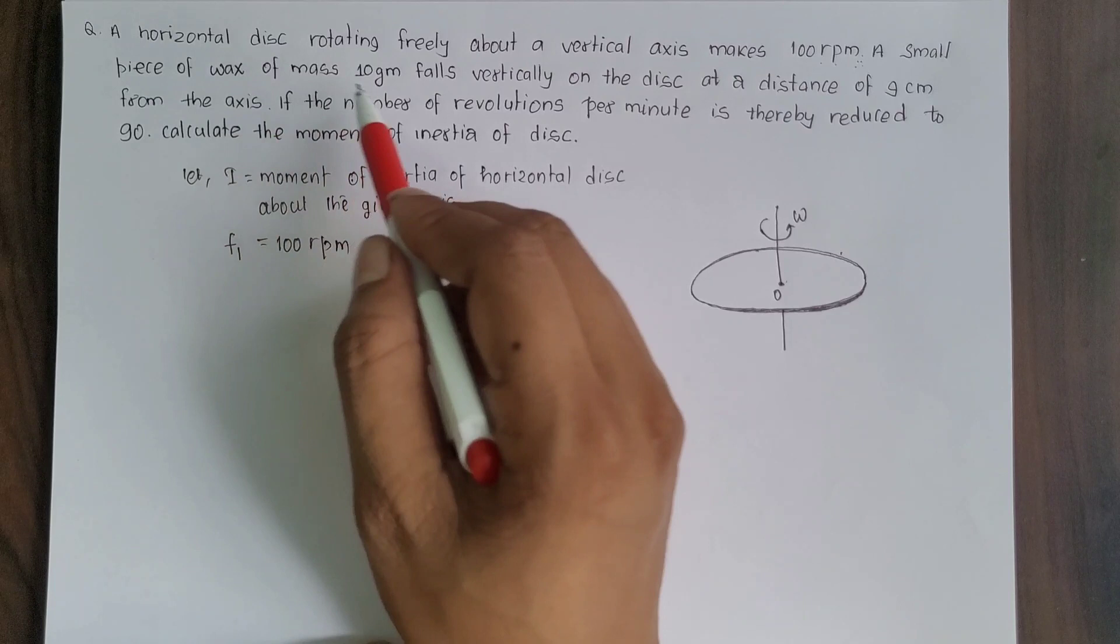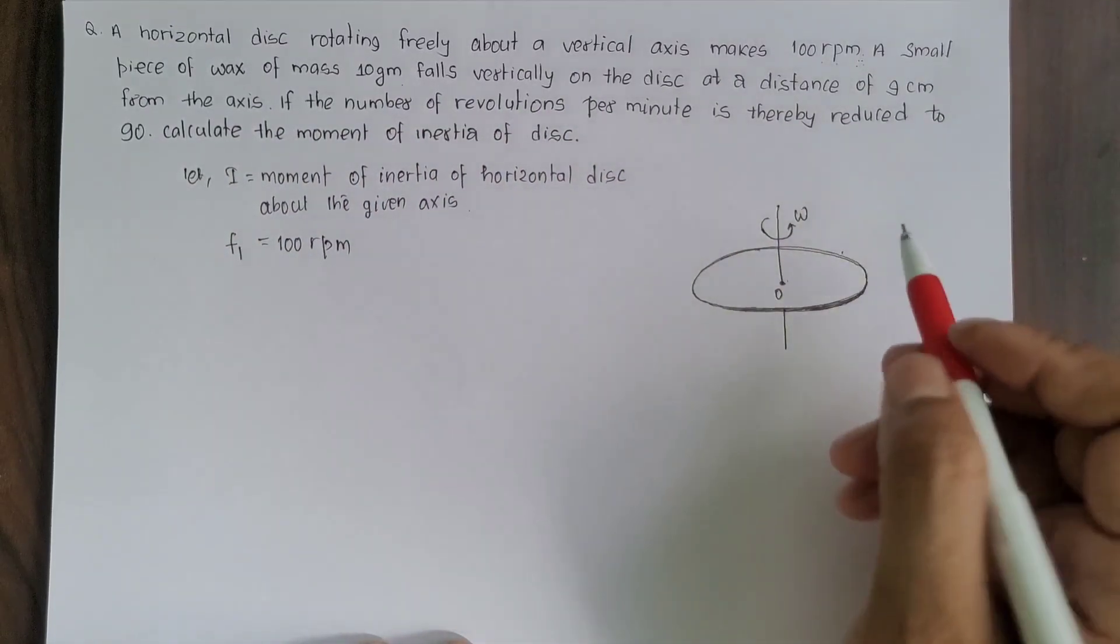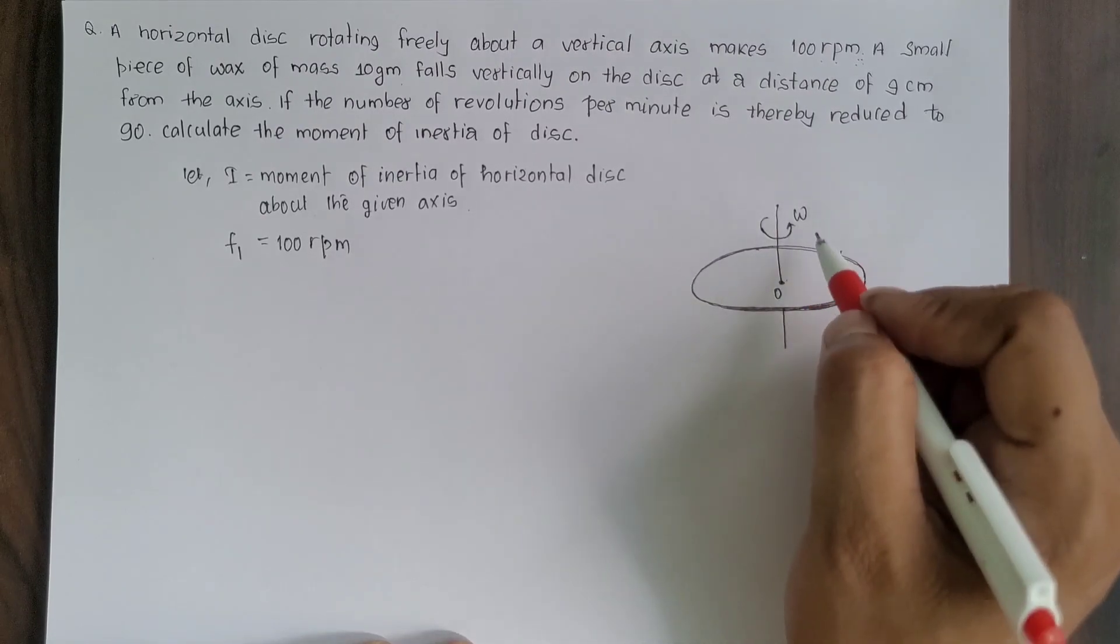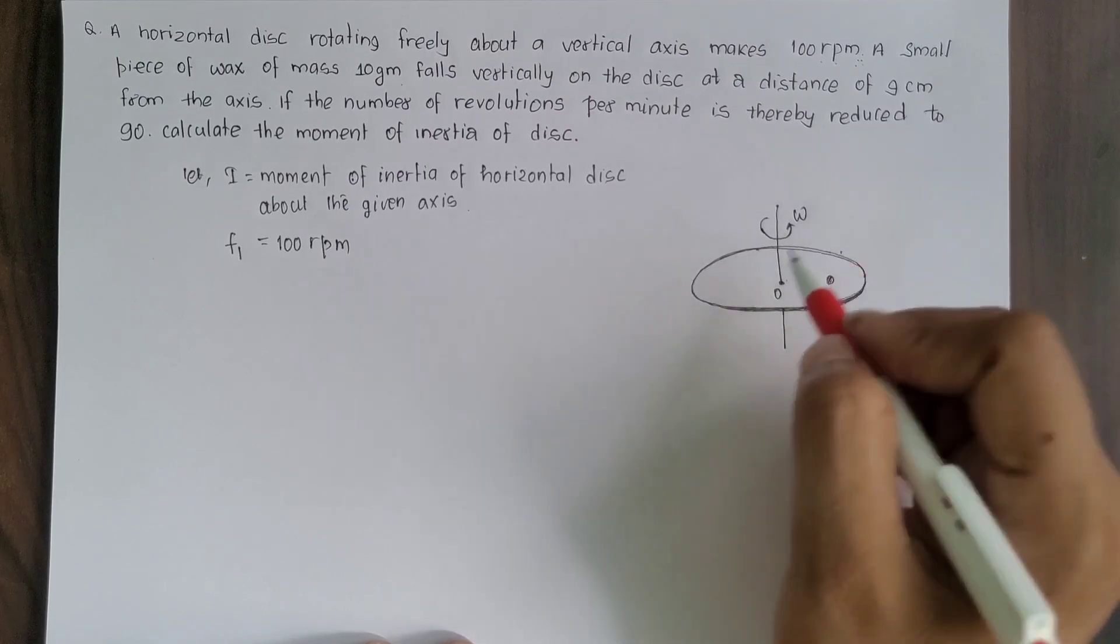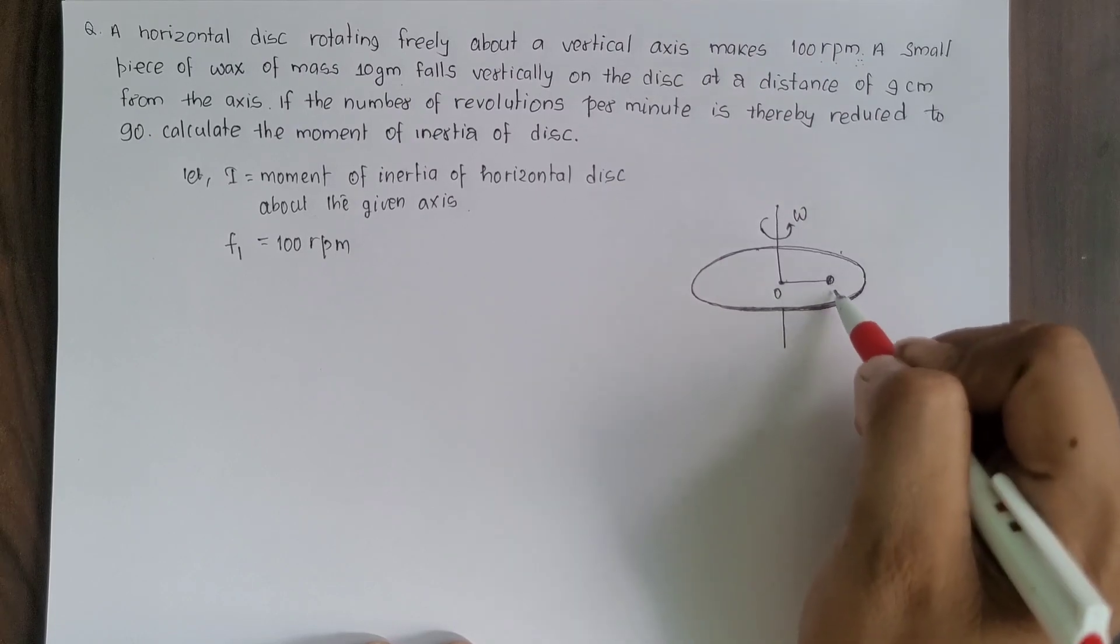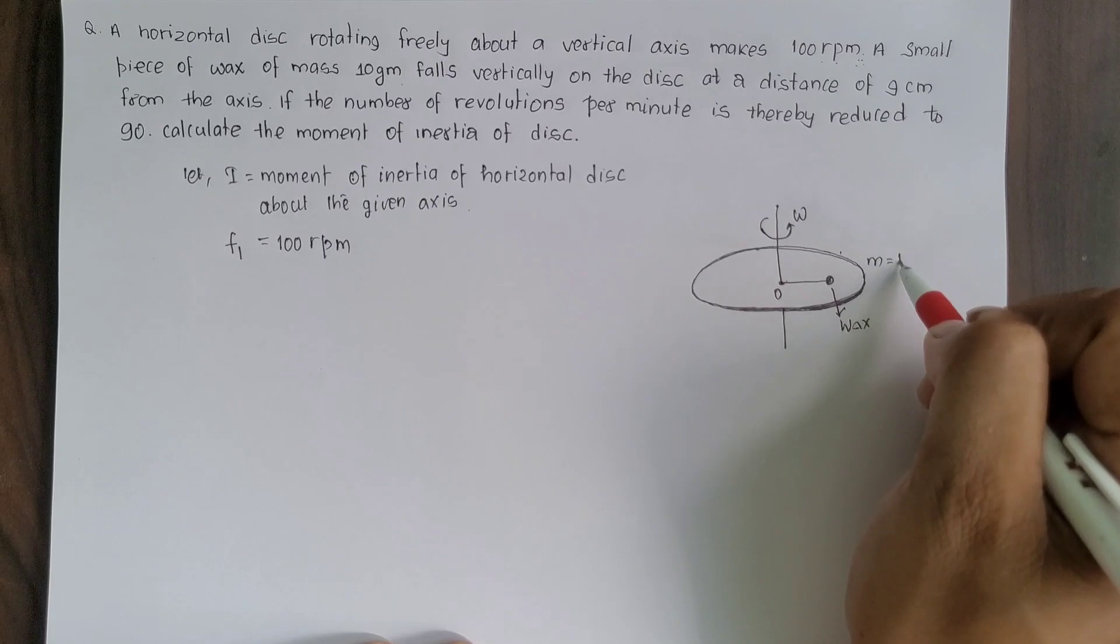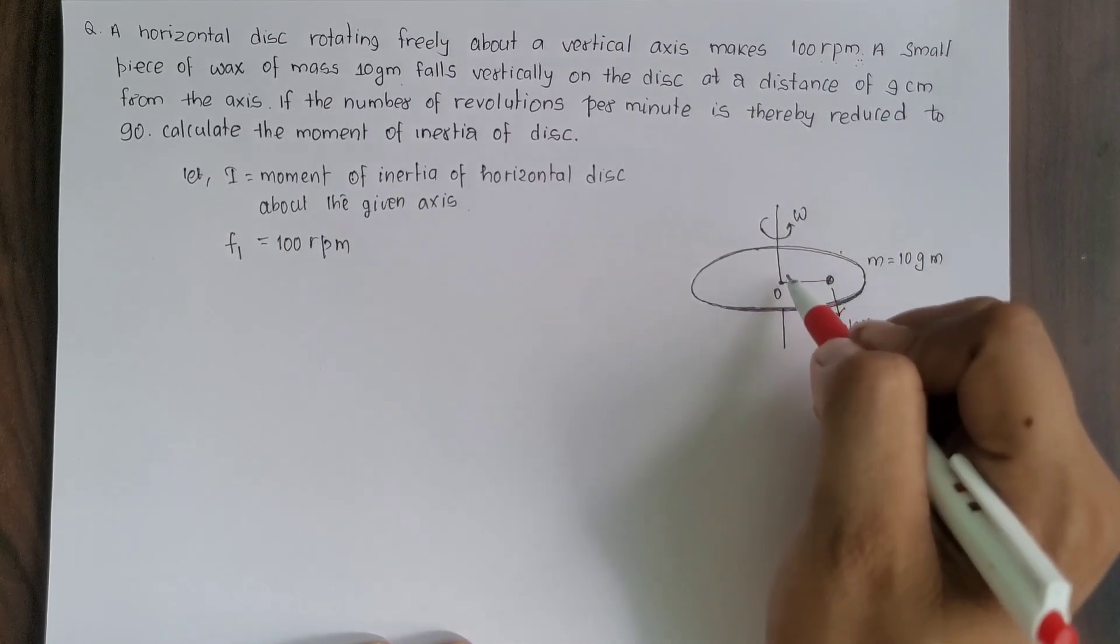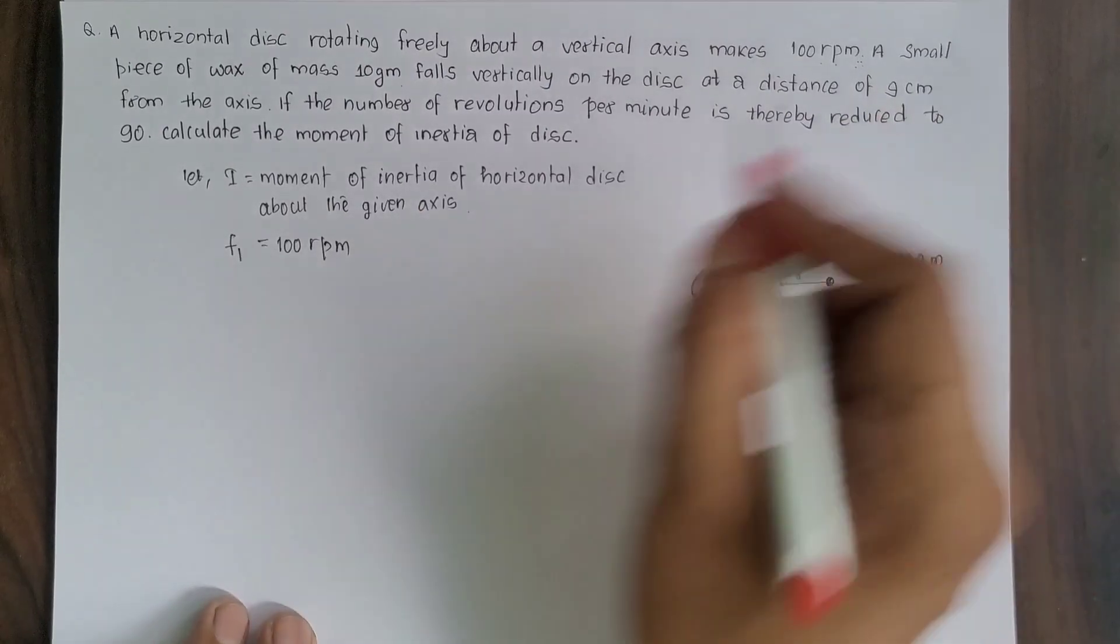Then a small piece of wax of mass 10 gram falls vertically on the disc at a distance of 9 cm. On the rotating horizontal disc, small piece of wax of mass 10 gram falls, which is from the axis of rotation at 9 cm.